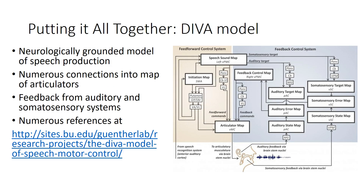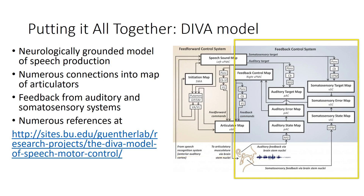These ideas have been brought together in an articulatory and acoustic model of speech called the DIVA model, where researchers have attempted not just to figure out how speech sounds work but also which parts of the neurological system are in control. There's a feed-forward system providing commands for speech articulations, and multiple feedback systems monitoring articulations to ensure the right movement and the right acoustic result. I just wanted to give you an example of how we might put it all together—you do not need to know all of these details.